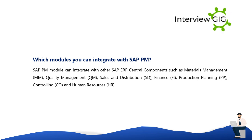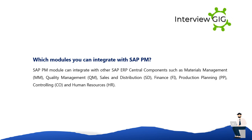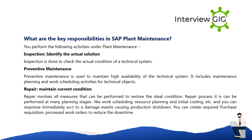Which modules can you integrate with SAP PM? The SAP PM module can integrate with other SAP ERP Central Components such as Materials Management, Quality Management (QM), Sales and Distribution (SD), Finance (FI), Production Planning (PP), Controlling (CO), and Human Resources (HR).